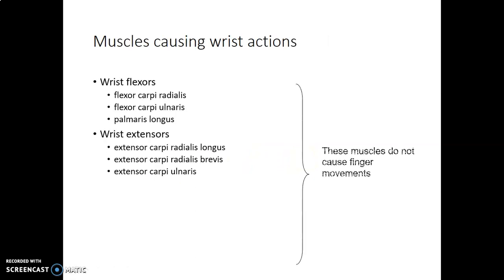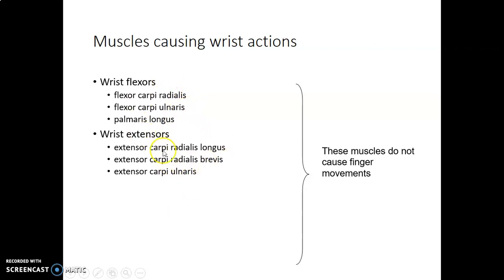The wrist flexors are flexor carpi radialis, flexor carpi ulnaris and palmaris longus. The wrist extensors are extensor carpi radialis longus, which attaches on the dorsum of the second metacarpal base; extensor carpi radialis brevis on the dorsum of the third metacarpal base; and extensor carpi ulnaris on the dorsum of the fifth metacarpal base. These muscles do not cause finger movements — they insert onto the metacarpals.